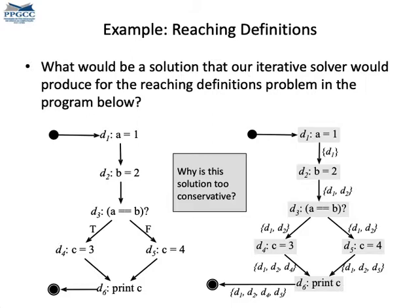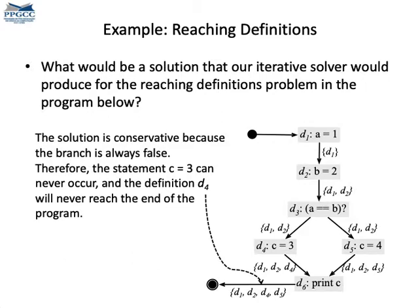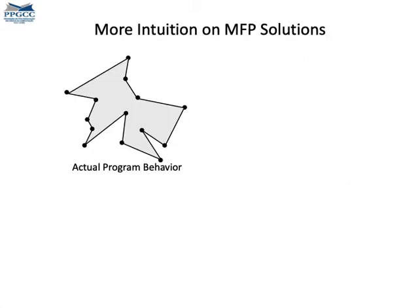We say that the solution is conservative. In a way, it means that we are reporting facts that may never happen in practice. In this example, we can never arrive at point D4, so definitions will never reach that point because the branch at D3 is always false. But the static analysis still says that the definitions at D1 and D2 can reach that point. We call this information false positives — we are saying things that will never happen. But false positives are not really wrong; they are just imprecise in the case of reaching definitions.